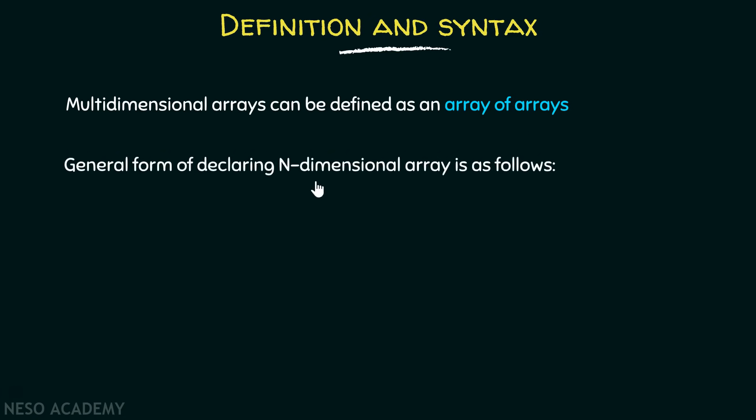The general form of declaring N-dimensional arrays is as follows: you have to specify the data type, then the name of the array, and then these square brackets. Inside these square brackets you have to put the sizes, that is the number of elements.